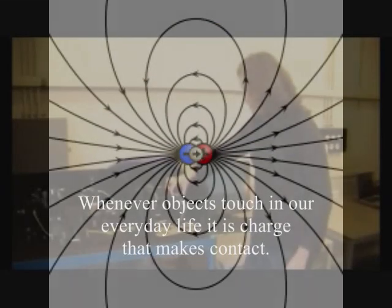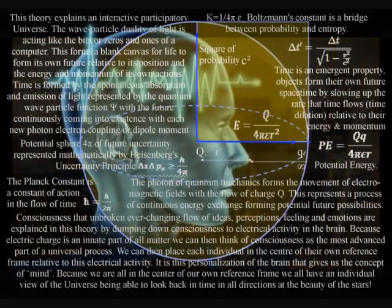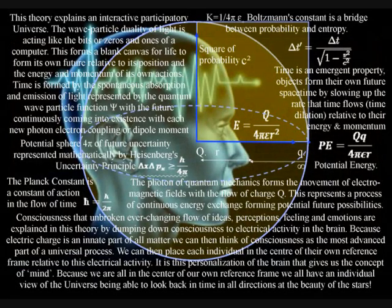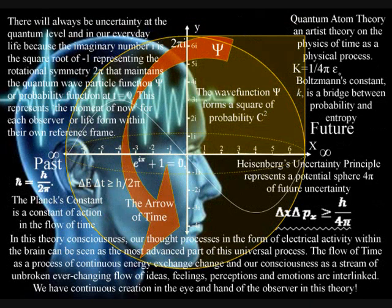The most advanced part of this universal process is in the form of electrical activity in the brain, being able to comprehend and measure this process as the flow of time with the past and uncertain future.